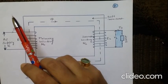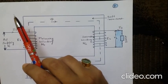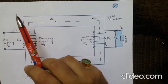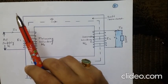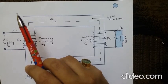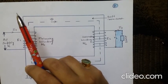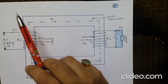For an ideal transformer, the following assumptions are made. First, the primary and secondary winding resistances are negligible. Second, there is no leakage flux and all the flux is confined to the core and links both windings. Third, hysteresis and eddy current losses in the transformer core are negligible. Fourth, the core has infinite permeability so that the magnetizing current required to produce and establish the flux in the core is negligible.